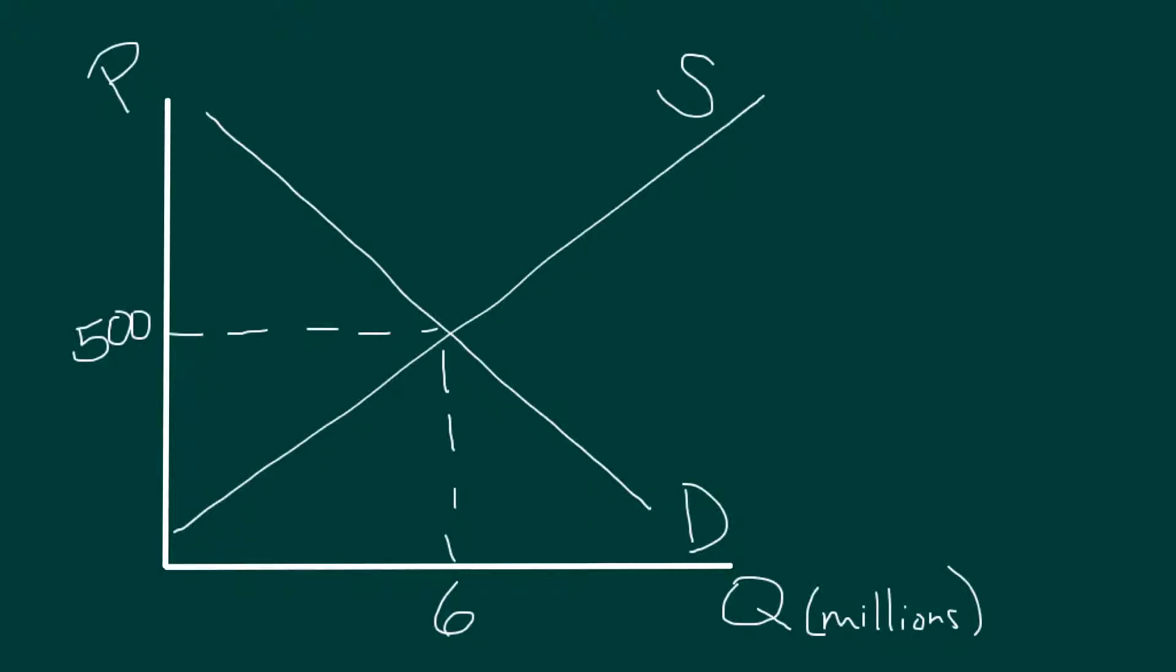Alright, so let's say we're looking here at the market for iPads, and we can see here as we've learned up to this point that we've got our demand curve going down with our negative slope and our supply curve with its upward slope. They're meeting at this point here and telling us that the market equilibrium price is $500 and the quantity is apparently six million.